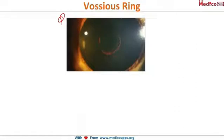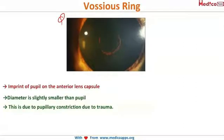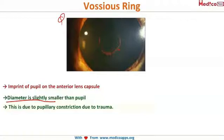Now let's look at what happens to the pupil. The Vossius ring is nothing but the imprint of the pupil on the anterior capsule of the lens. When the eye is hit, the pupil goes and touches the anterior capsule of the lens. The diameter of the ring is slightly smaller than that of the pupil because there is a constriction of the pupil under traumatic conditions.